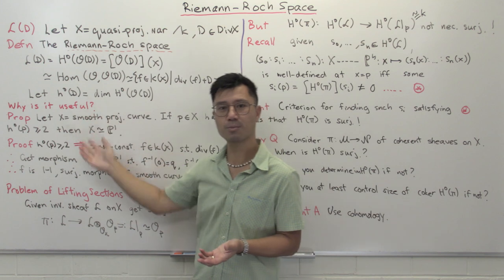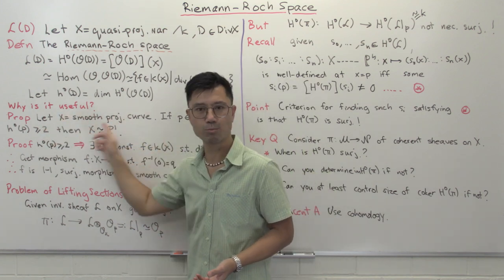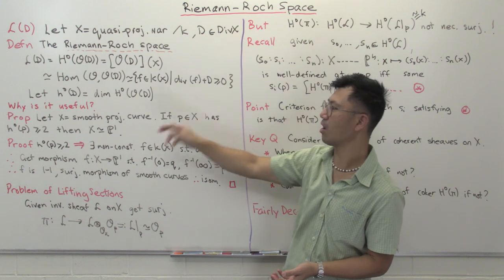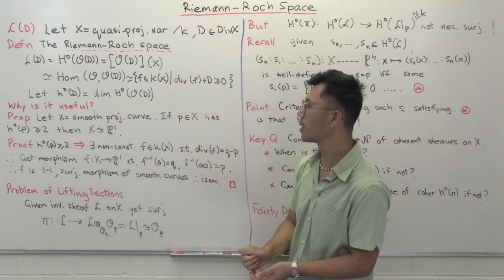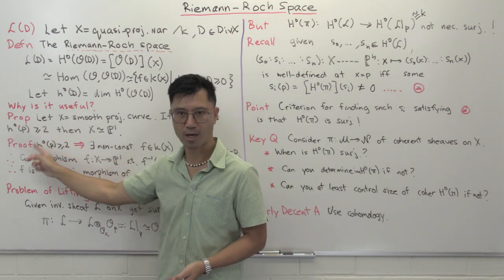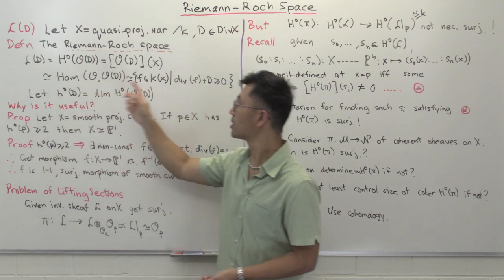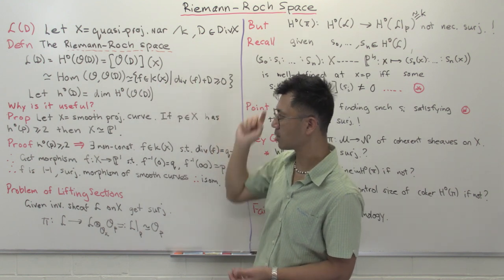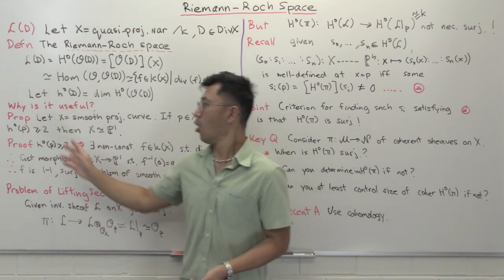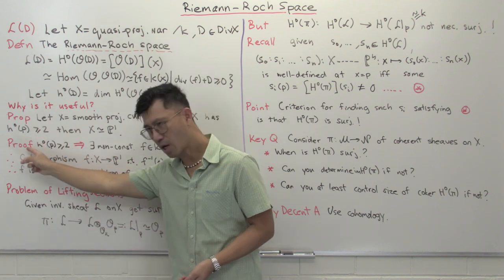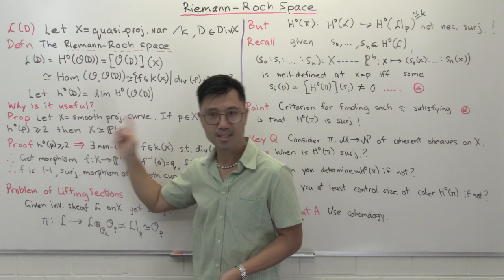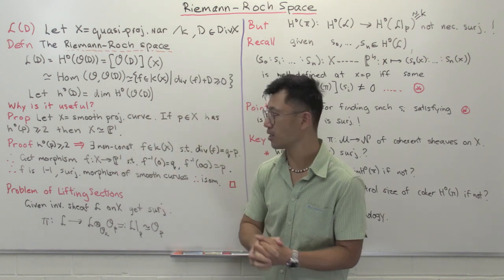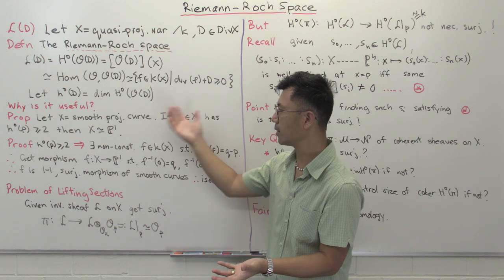Let me give you a proposition showing quite specifically how we can use it. Suppose X is a smooth projective curve, and we pick a point P on X — that's a divisor on X since this is a curve, so it's codimension one. Suppose we're in the situation where h⁰(P) ≥ 2, in other words when you look at all rational functions F such that div(F) + P ≥ 0, the dimension of that space is at least two. Once you have this numerical information, and you know X is a smooth projective curve, you know straight away that X is actually isomorphic to P¹.